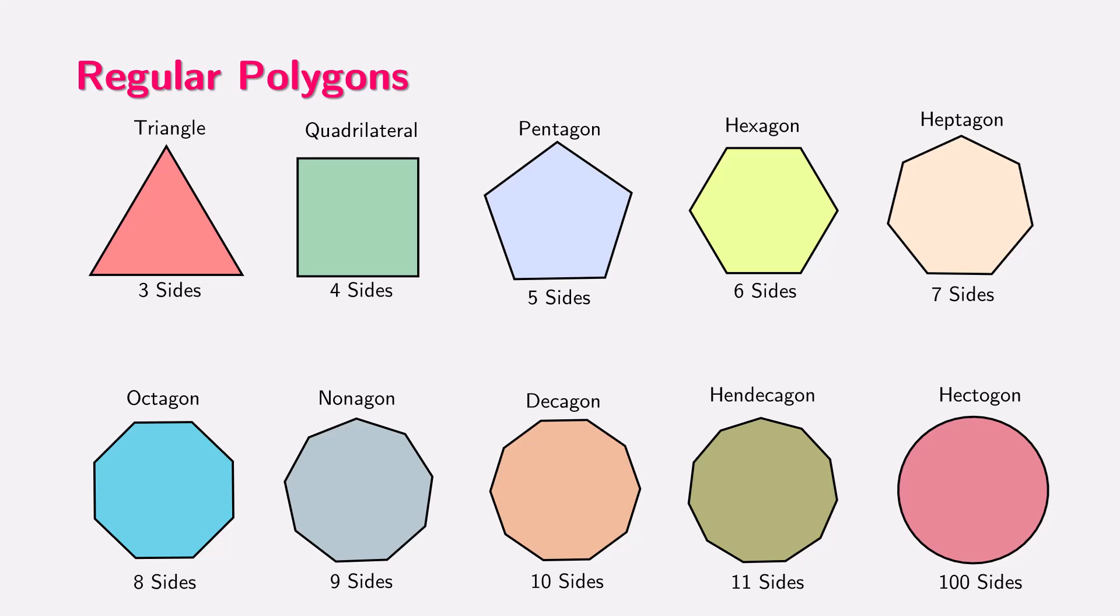Here we have a series of shapes called regular polygons. A polygon is a flat shape with straight sides. When we say regular polygon, it means all sides of the shape are of equal length and all its angles are equal. We will study more about angles in the upcoming videos. Let's look at these polygons one by one.